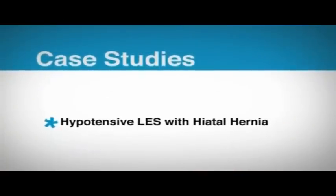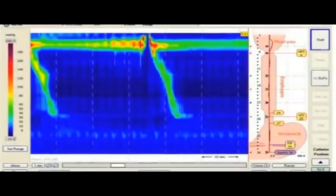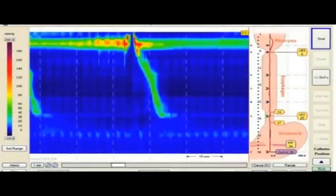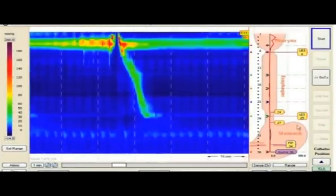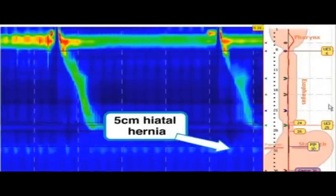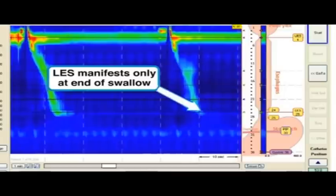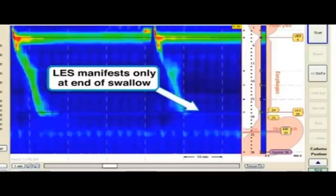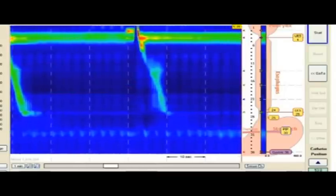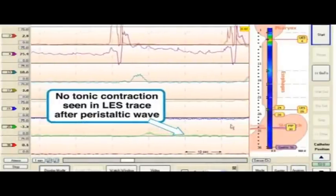Hypotensive LES with hiatal hernia. In this case, the pressure inversion point is clearly seen to be below the LES, and a 5-centimeter hernia is identified by simply moving the anatomical markers. The LES pressure manifests only briefly at the end of the swallow, with a near-complete loss of resting pressure at the sphincter. This loss of tonic contraction is also seen in the green LES line trace.